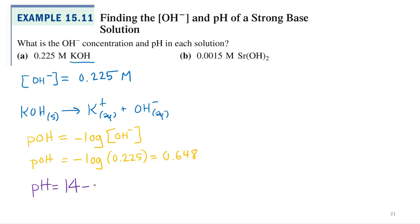14 minus that, so pH equals 14 minus the pOH. Remember deriving that equation? 14 minus 0.648 equals 13.352. I'll take either one.